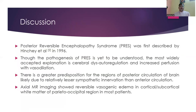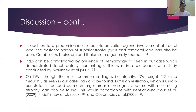Now coming to the discussion part. Posterior reversible encephalopathy syndrome, that is PRES, was first described by Hinchey et al. in 1996. Though the pathogenesis of PRES is yet to be fully understood, the most widely accepted explanation is cerebral autoregulation failure with increased perfusion and vasodilation. There is a greater predisposition for regions of the posterior circulation of the brain, likely due to relatively lesser sympathetic innervation than the anterior circulation. Axial MR imaging showed reversible vasogenic edema in the cortical and subcortical white matter of the parieto-occipital region in most patients. In addition to a predominance for the parieto-occipital region, involvement of the frontal lobe, the posterior portion of the superior frontal gyrus, and the temporal lobe can also be seen. Cerebellum, brainstem, and thalamus are generally spared. PRES can be complicated by the presence of hemorrhage, as seen in our case, which demonstrated as focal patchy hemorrhages, in accordance with a study conducted by McKinney et al., 2007.